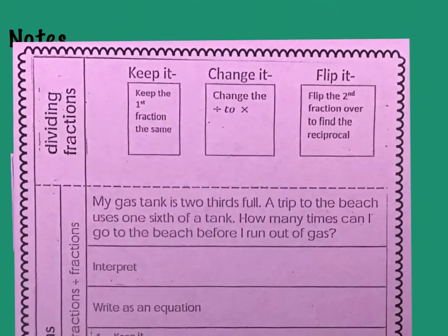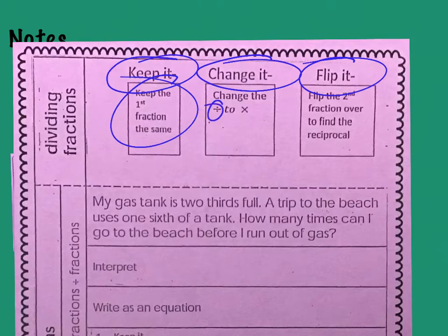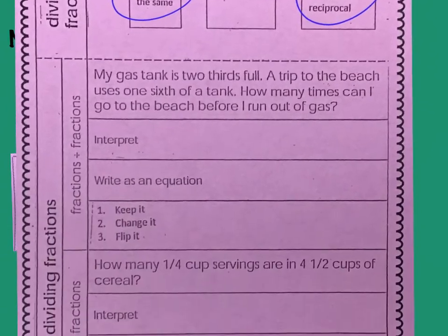The other page has to do with how do we divide fractions. And we're going to kind of introduce you to the keep it, change it, flip it. And maybe you learned that in 5th grade. Maybe this is new to you. But we're going to do keep it, change it, flip it. And what that means is when we are dividing a fraction, that's what we want to do. We keep the first fraction the same. If it's a mixed number, you do have to change it into an improper fraction first. Then, we're going to change the division sign to a multiplication sign. And then, we're going to take that second fraction and we are going to flip it.